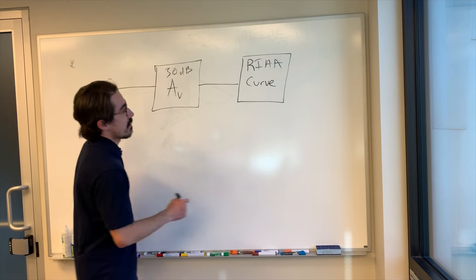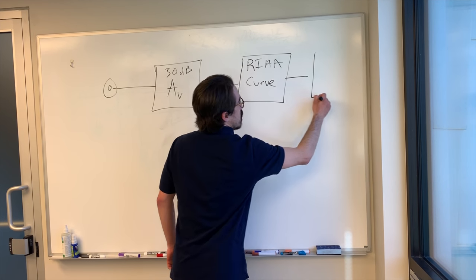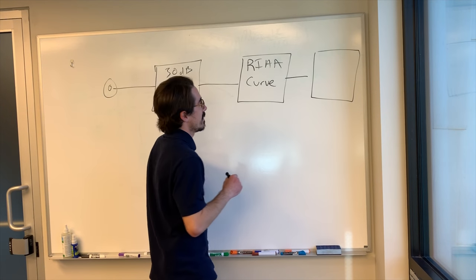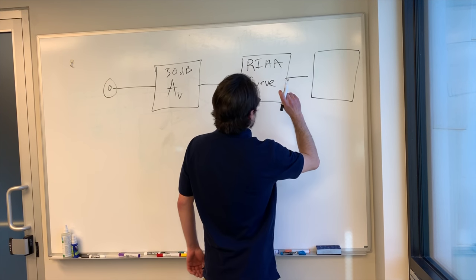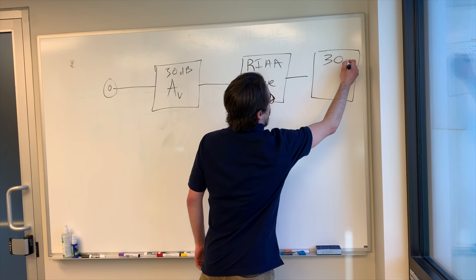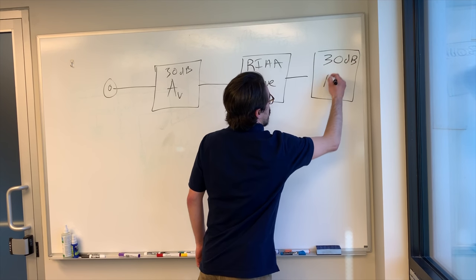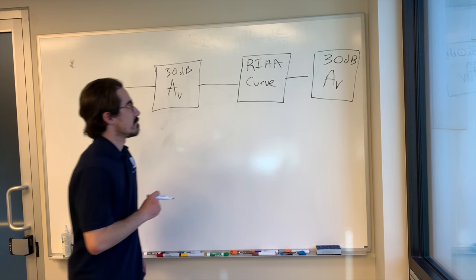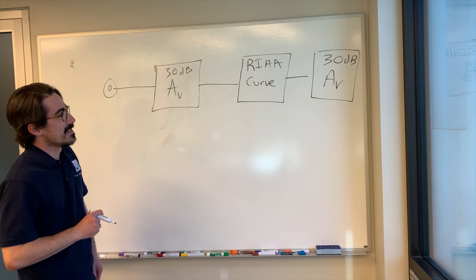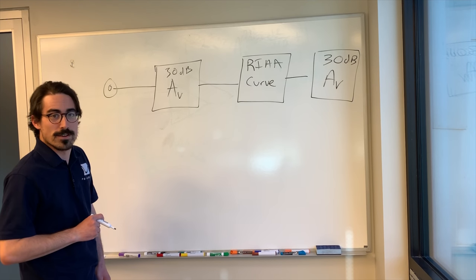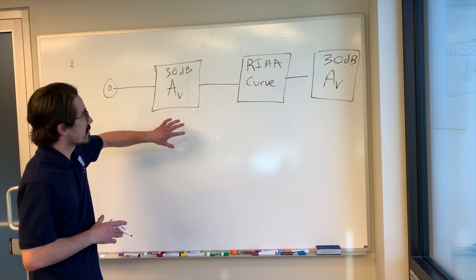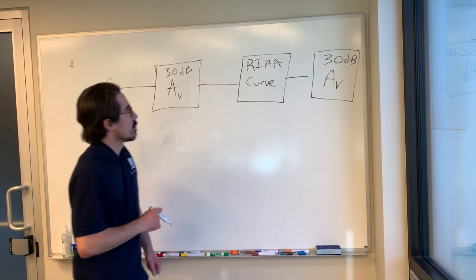From there, we're going to have to apply another gain block. Man, I'm running out of space here. Which is going to be another flat 30 dB gain block. That is a phono preamp. So now, I'm just going to talk about what's inside of that.